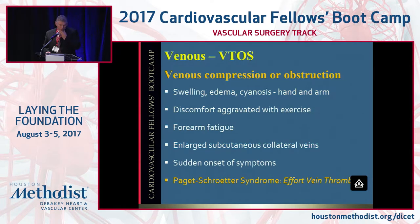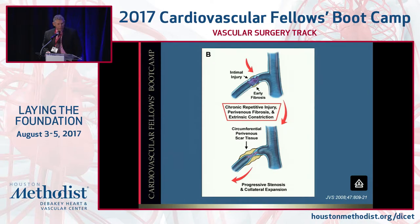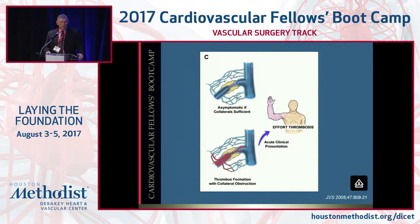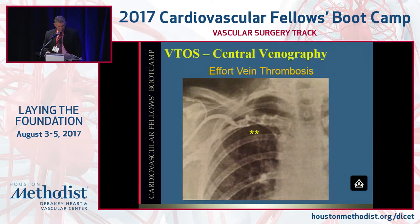How about VTOS, venous compression or obstruction? You can get swelling, edema, cyanosis. VTOS is not always synonymous with Paget-Schroetter or effort vein thrombosis — you can get compression without thrombosis and significant dysfunction. You can get forearm fatigue, large subcutaneous collateral veins, and sudden onset symptoms. With chronic repetitive injury you get early fibrosis and circumferential perivenous scarring, collaterals develop, and it's only when thrombus forms and exceeds the collaterals' ability to return blood flow to the heart that you get symptoms. It can be slowly progressive or very acute. Here's an example of a venogram showing subclavian axillary vein thrombosis with effort vein thrombosis.